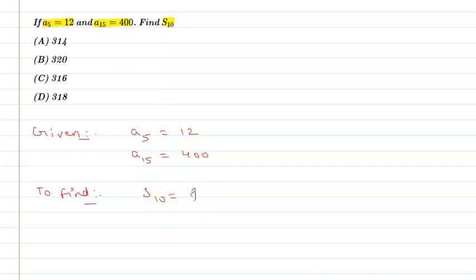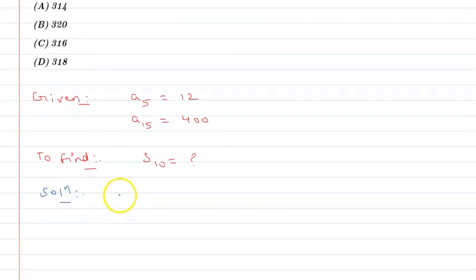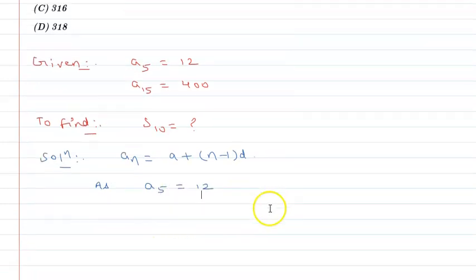So let's start. If I have 5th term and 15th term, then I can show you that A5 is a plus (n-1) into d. So when I look at A5, I can show you that A5 is according to formula.